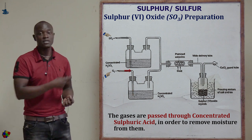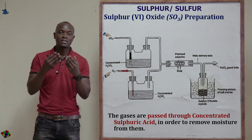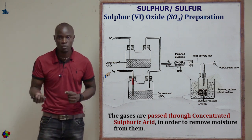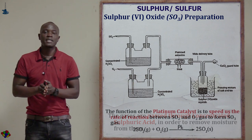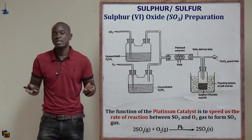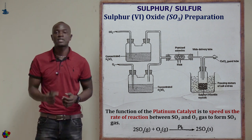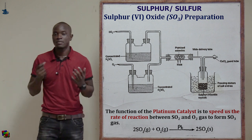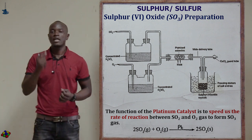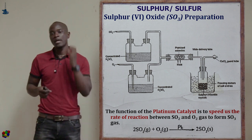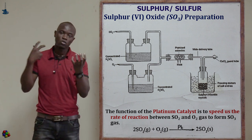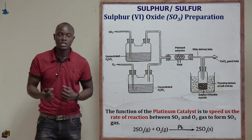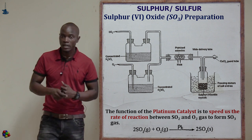Similarly, the concentrated sulfuric acid is used to remove water vapor from the oxygen as well. So the gases now being reacted in the presence of platinized asbestos are pure sulfur 4 oxide and pure oxygen. This catalyst, the platinized asbestos, is used to speed up the rate of reaction by which sulfur 4 oxide reacts with oxygen.